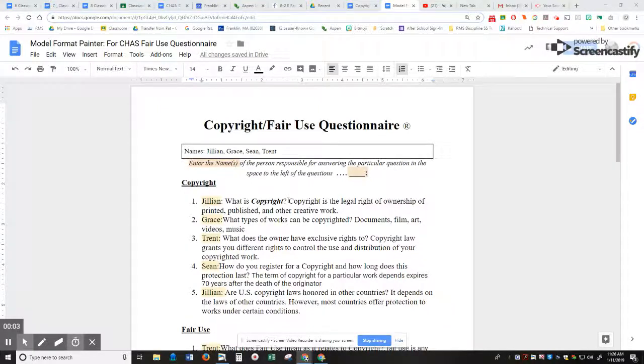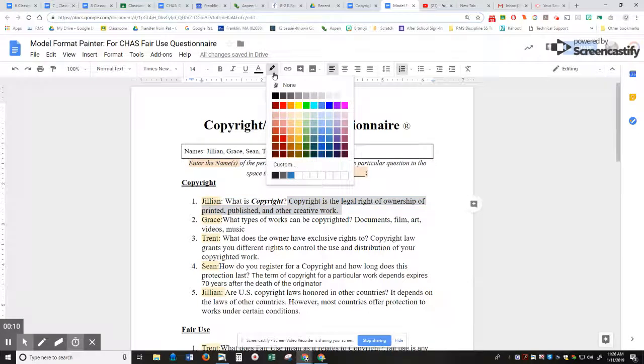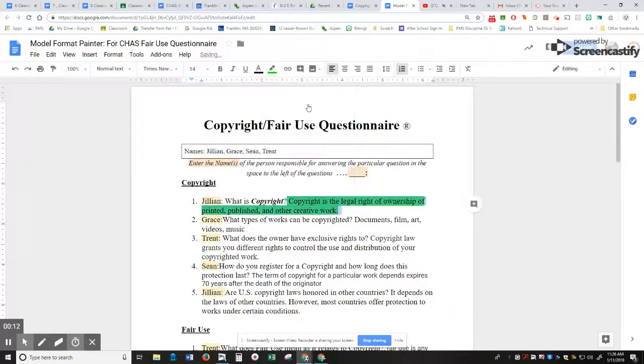If we're going to highlight some text, I would select the text and then go up to the highlighter, click highlight, and then click the color I want.